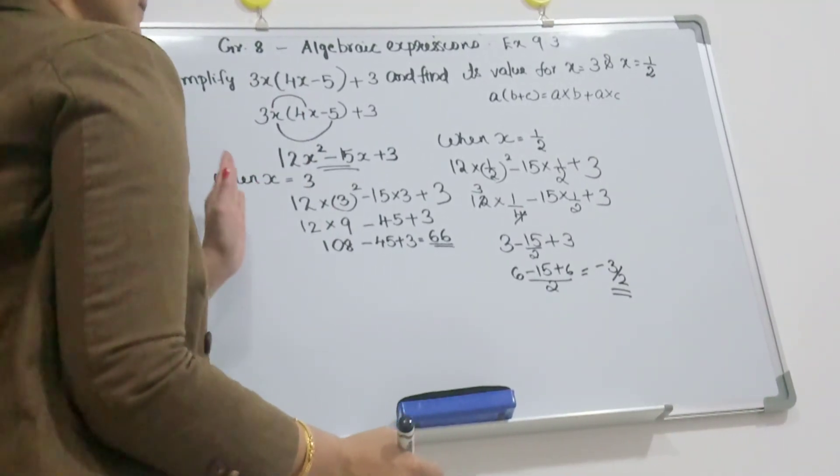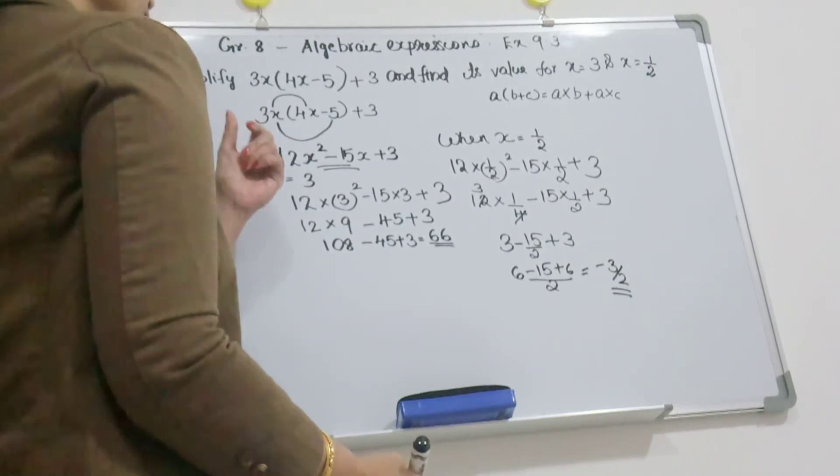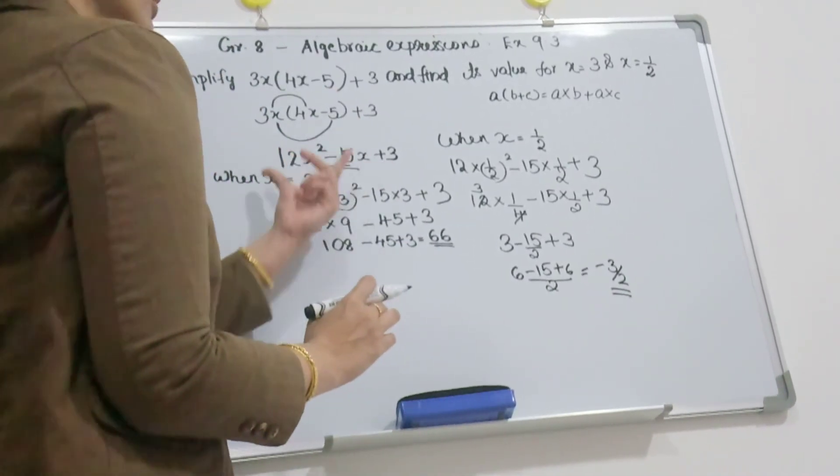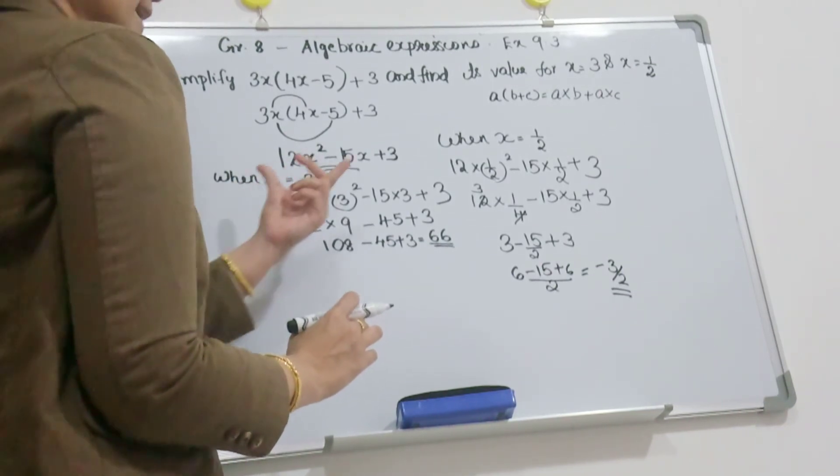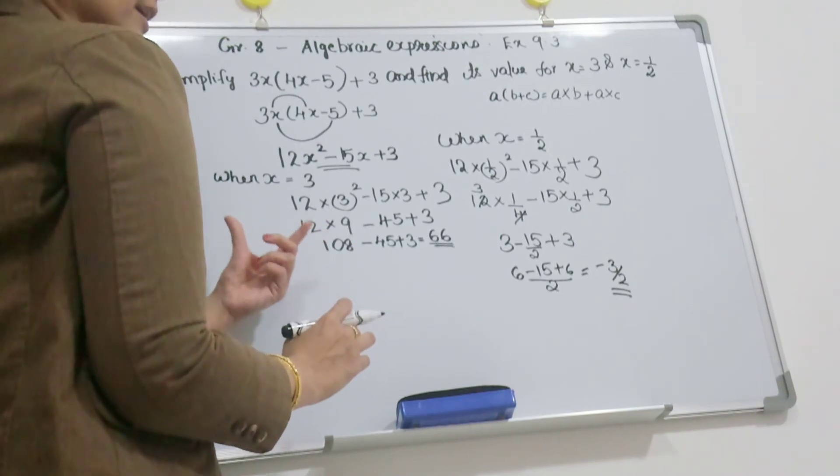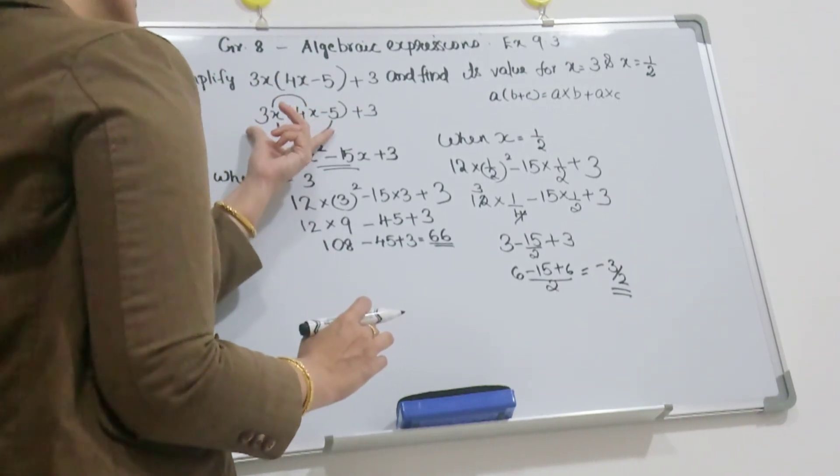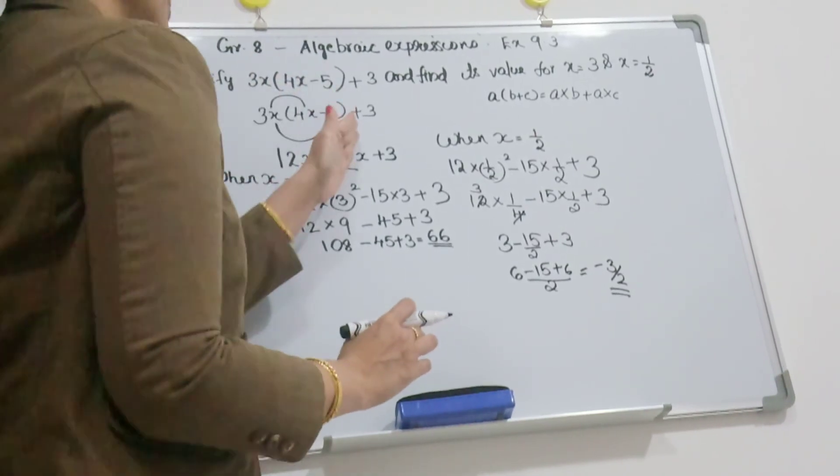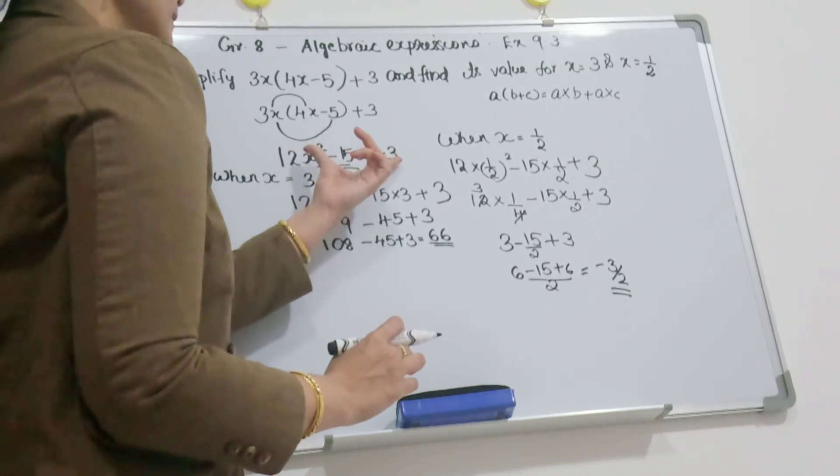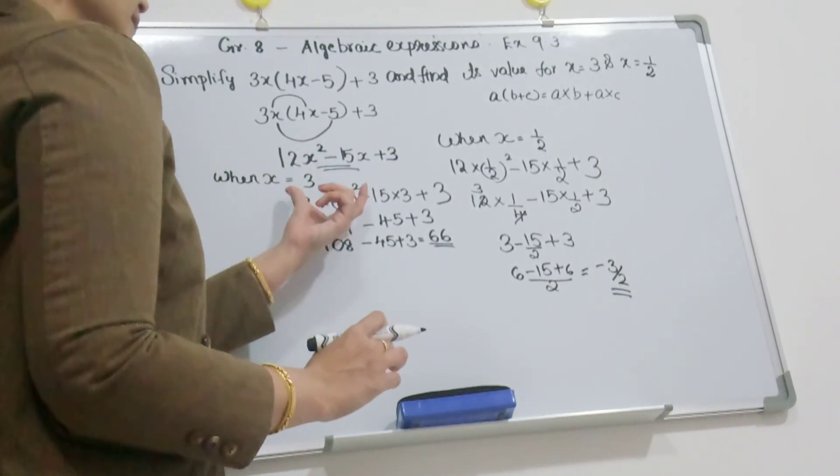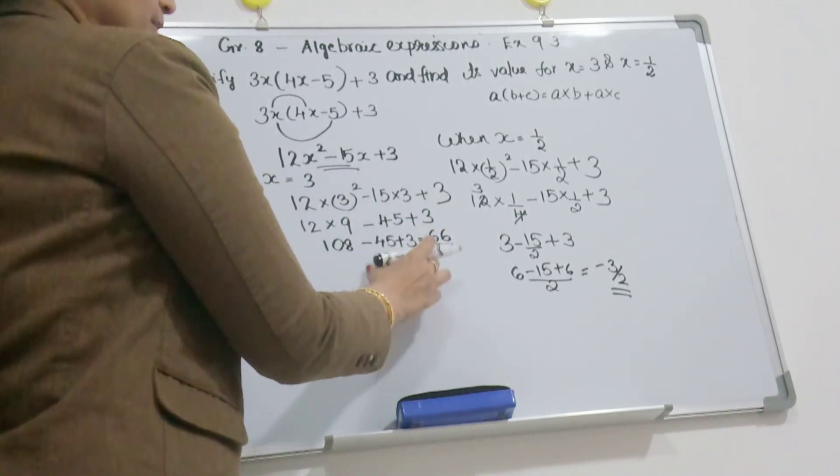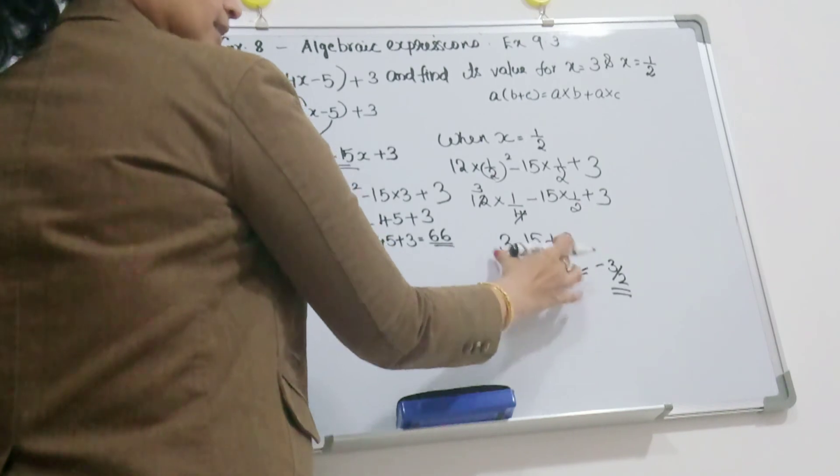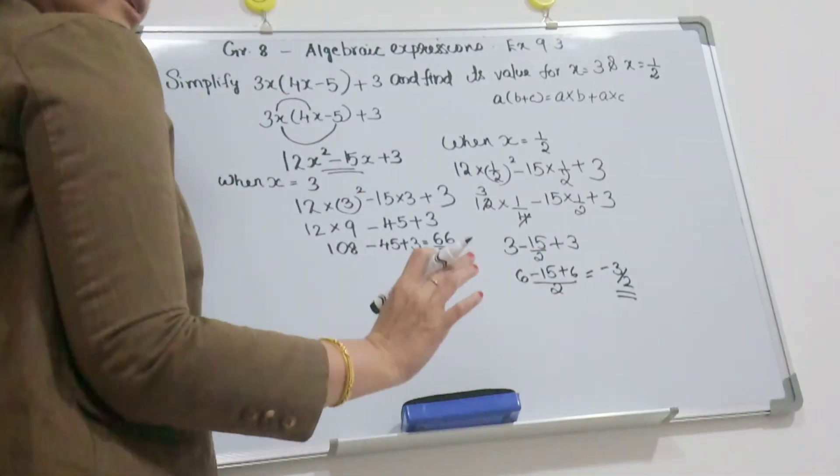This is the answer. I will explain in Malay also. Simplify means you make it shorter form. Remove the bracket using the distributive property. Substitute the values when x equals 3 and when x equals 1 by 2, and solve using LCM. Thank you students.